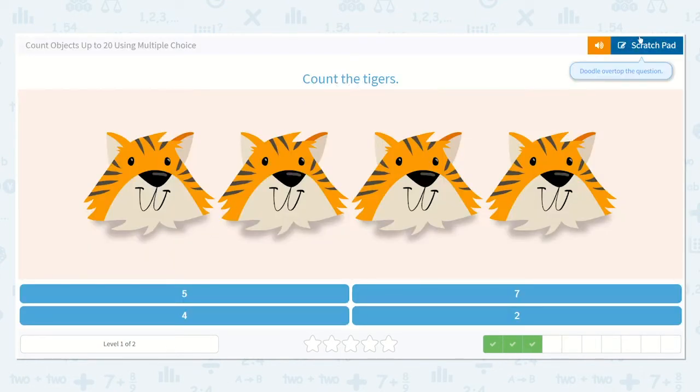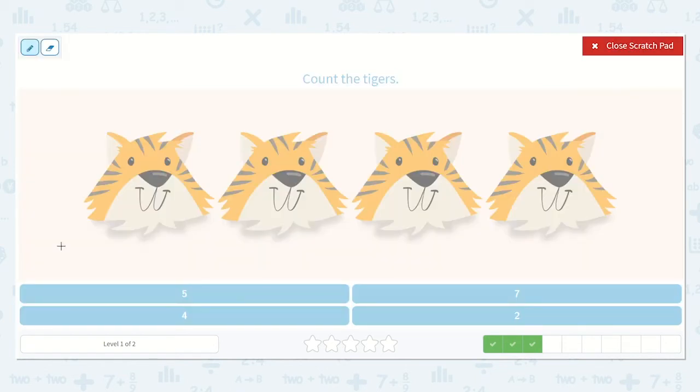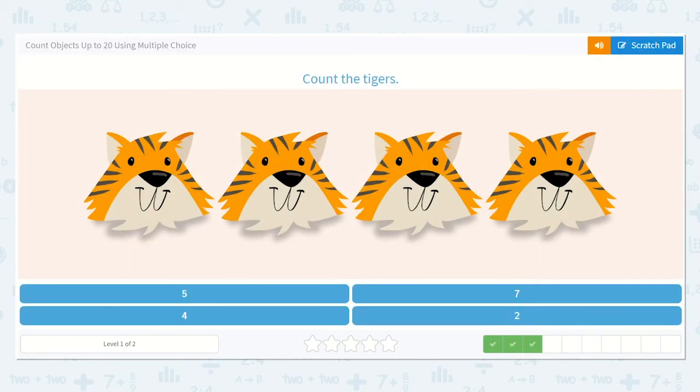Now let's count the tigers. I'll draw the lines again. One, two, three, four. I see four tigers. Do you see a four below? Let's look at all our options. Our options are five, seven, four, or two. Four, you're right. That is the correct option. So let's choose four.